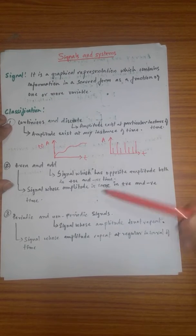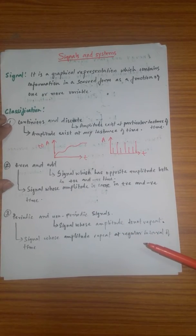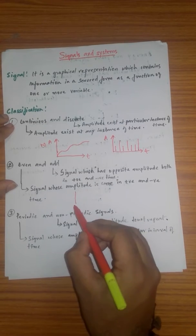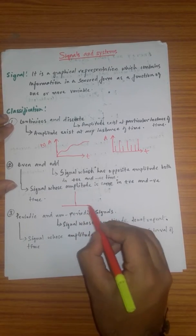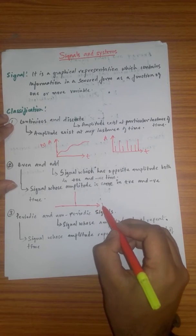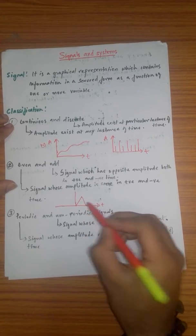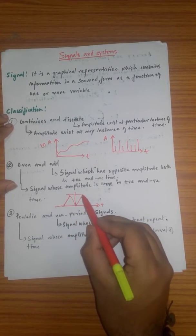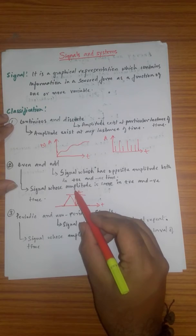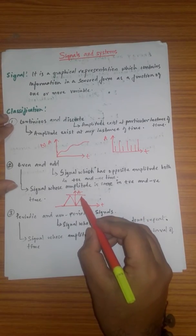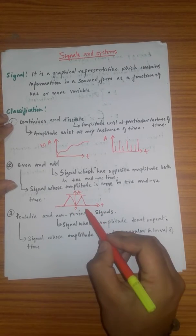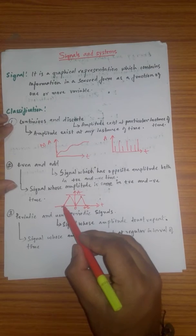Now we go for even and odd signals. Even signals are those whose amplitudes are the same on both the positive and negative sides. For example, if you consider a signal where the positive time axis contains a signal going a certain way, then the negative time signal will also have the same shape. Both amplitudes are the same — for instance, plus 2 and minus 2. This is an even signal.